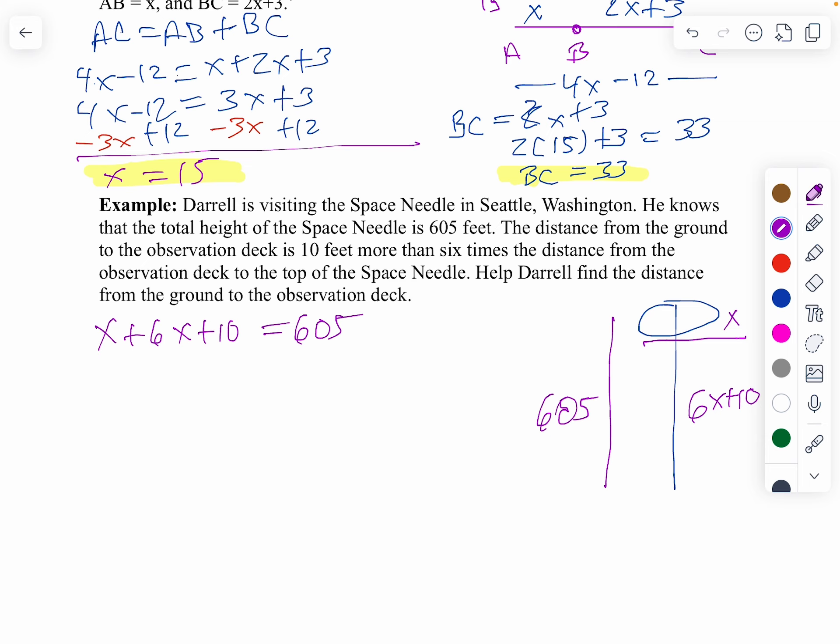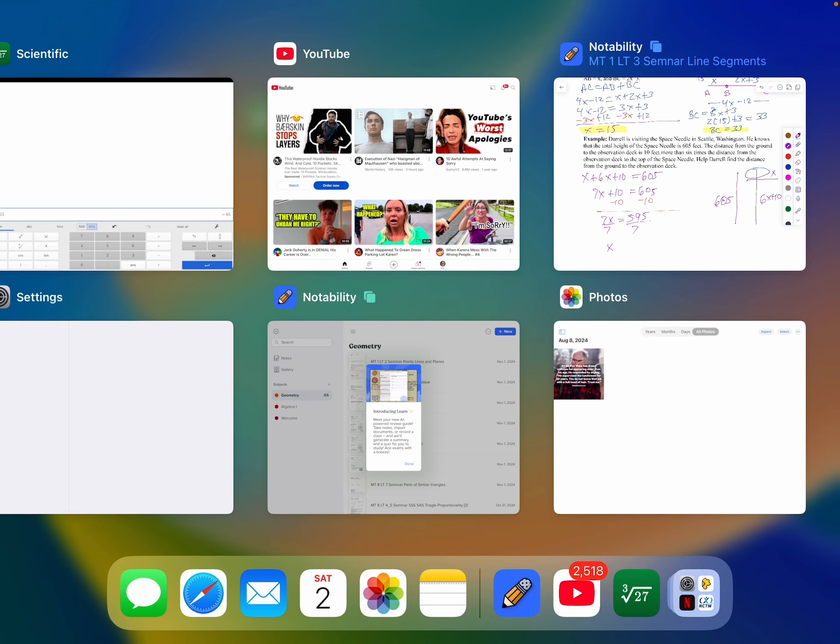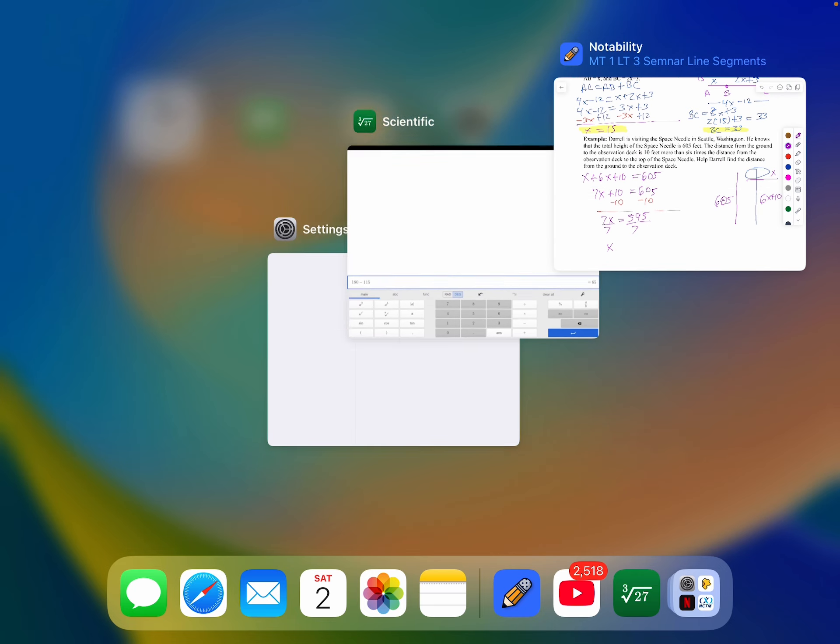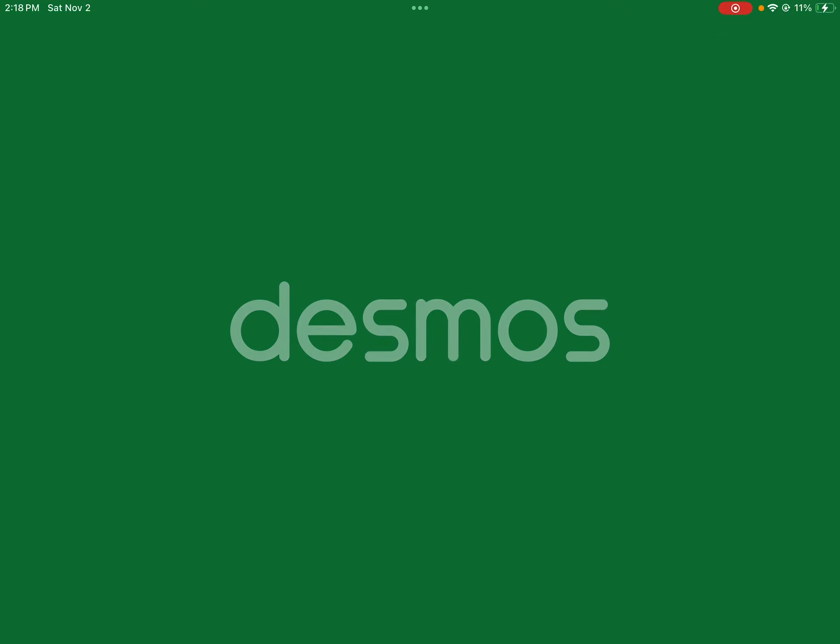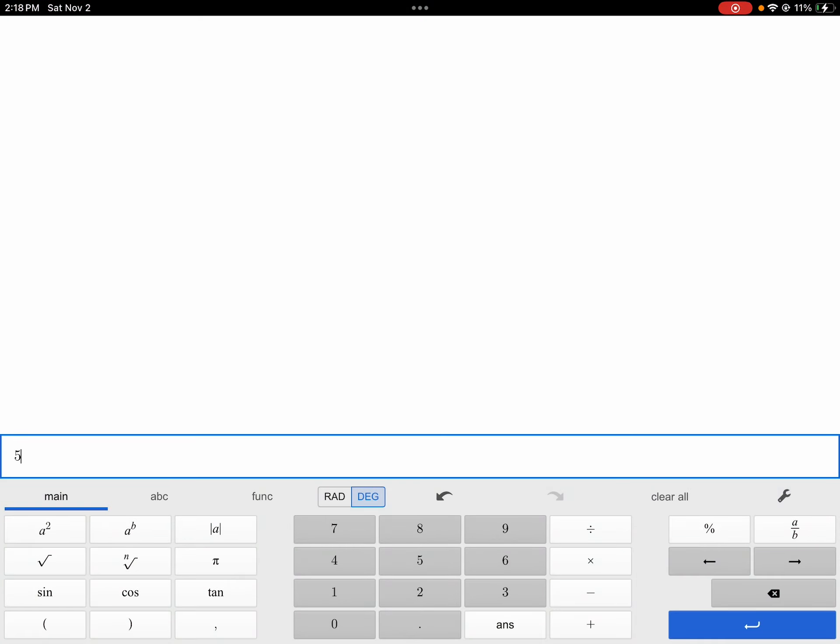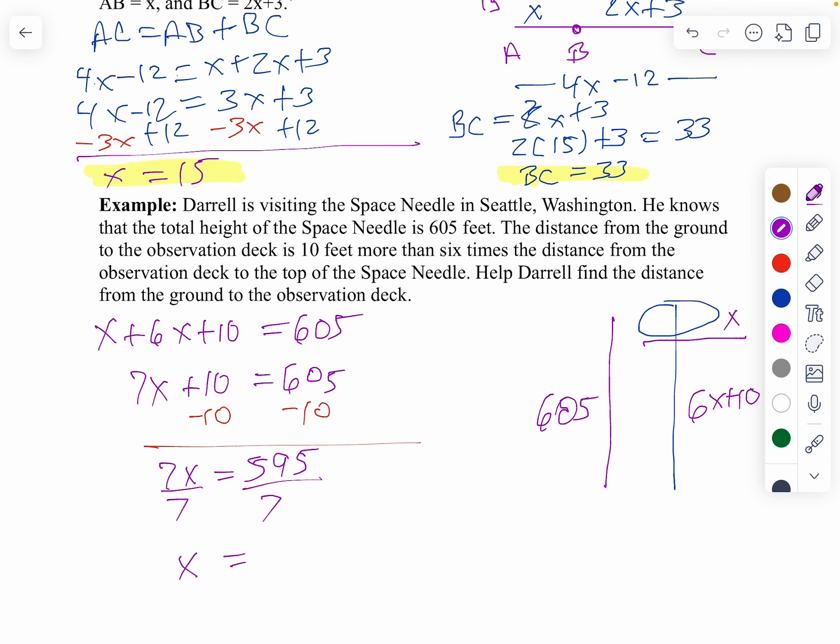Now, we're just going to solve that. x plus 6x is 7x plus 10 equals 605. In other words, I'm going to subtract 10 from both sides. And, I'm going to get 7x equals 595. So, we divide both sides by 7. I can't do that in my head. So, let me see. Let's use a calculator, but I've got to get a calculator open here. So, I'm going to take 595. My calculator opens up. We'll divide that by 7. And, we get 85 feet. So, I know the distance to the top of the space needle from the observation deck. That's 85.